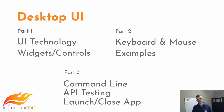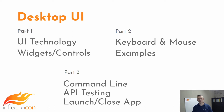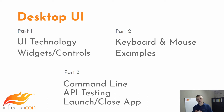If you search for information about UI testing, the majority of results will be devoted to web UI testing. Web UI and desktop UI have their own features and problems. In this three-part workshop, we will focus on things specific to desktop UI. In the first part, we will talk about automation technologies and control libraries. The second part is about keyboard and mouse input. The third part is about API access to applications, starting and closing applications, and passing command line arguments.